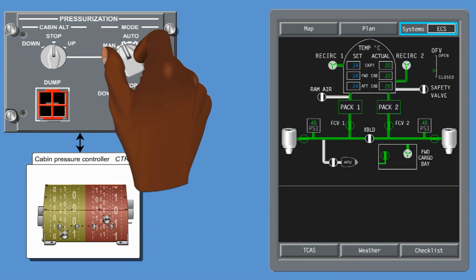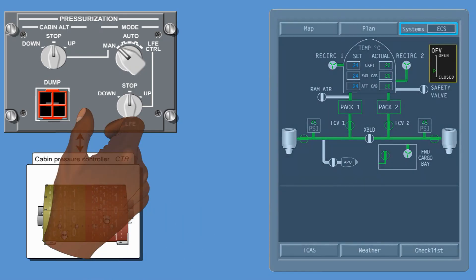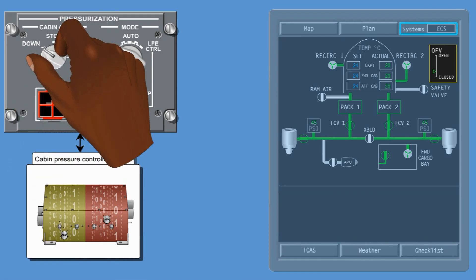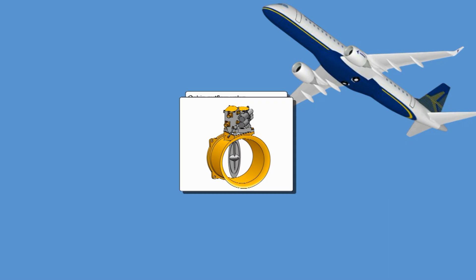In manual mode, both channels of the cabin pressure controller revert to standby mode. The outflow valve position can then be directly controlled by the pilots. Note: manual mode is differential pressure limited, but not cabin altitude limited, and no automatic cabin depressurization on ground is provided.